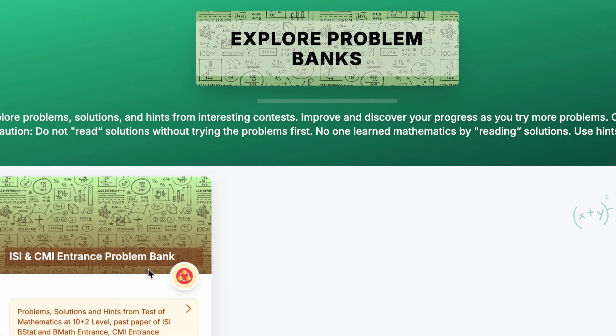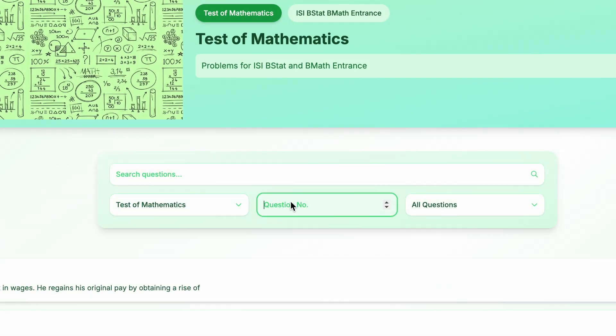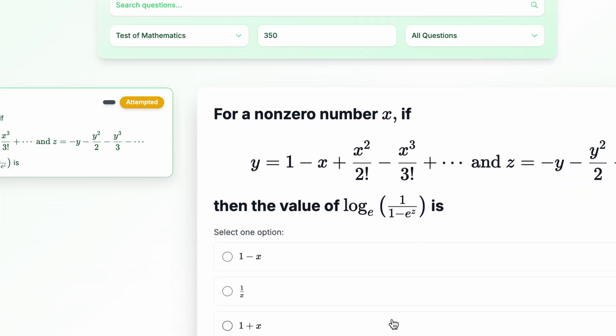Let's come back to the actual problem. So I'll go back to the problem bank, and I will choose test of mathematics. I will type in 350 because that's the problem that I'm doing, and let's come back to the blackboard and see what we are working on.